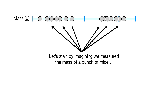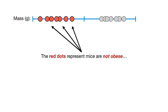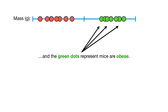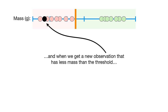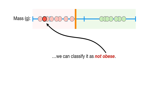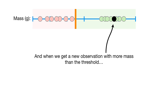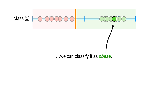Let's start by imagining we measured the mass of a bunch of mice. The red dots represent mice that are not obese, and the green dots represent mice that are obese. Based on these observations, we can pick a threshold. When we get a new observation that has less mass than the threshold, we can classify it as not obese. And when we get a new observation with more mass than the threshold, we can classify it as obese.